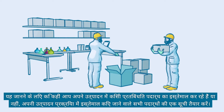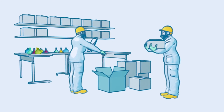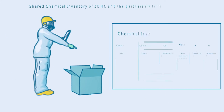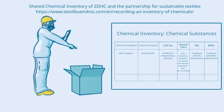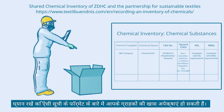To understand whether you are using any restricted substances in your production, prepare an inventory of all substances in your production process. Such an inventory is not only required by your buyers but also forms the basis for managing chemicals in a systematic way. Be aware that your buyers may have specific expectations regarding the format of such an inventory.